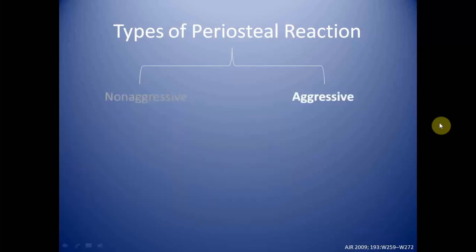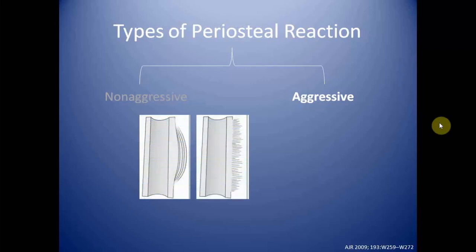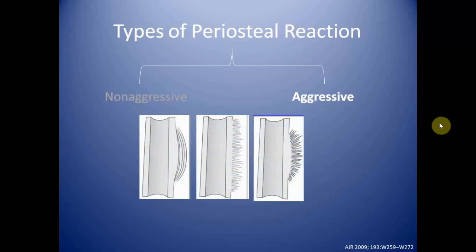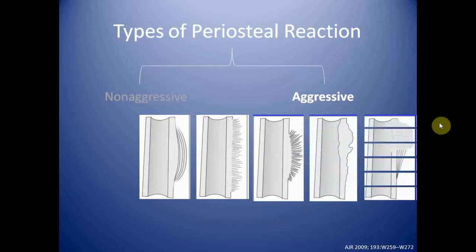In the aggressive category we can have a multilamellar onion-skin type of periosteal reaction, a hair-on-end type, a sunburst type, a disorganized type, and a Codman angle type of periosteal reaction.